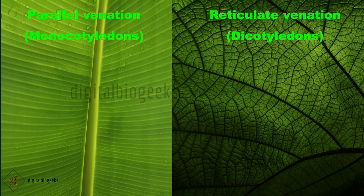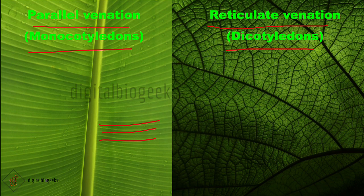The arrangement of veins and veinlets in the lamina is known as venation. When the veins run parallel to each other, that arrangement is called parallel venation. When they form a network, that is called reticulate venation. Dicotyledons show reticulate venation and monocotyledons show parallel venation.